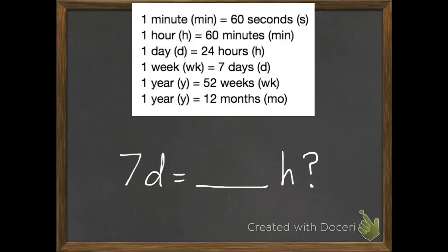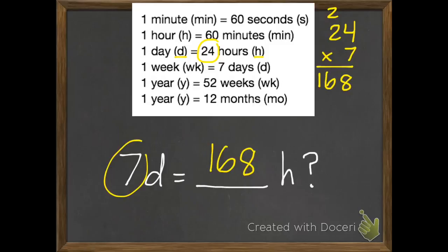Our second example: we have 7 days. We want to know how many hours that will equal. Right here we know that 24 hours equals 1 day. So if we have 7 days it's going to be 24 times 7. 7 times 4 is 28. 2 times 7 is 14 plus 2 is 16. So 7 days equals 168 hours.